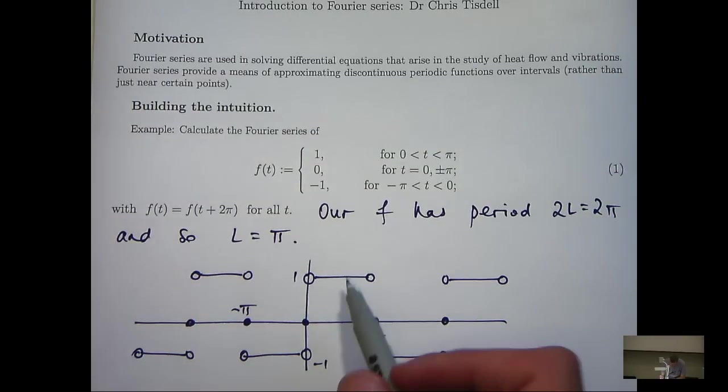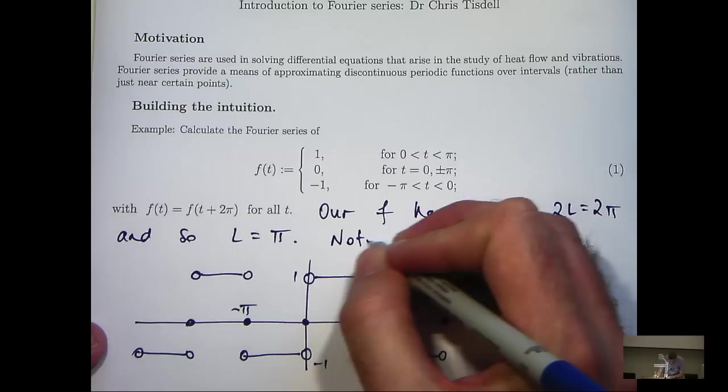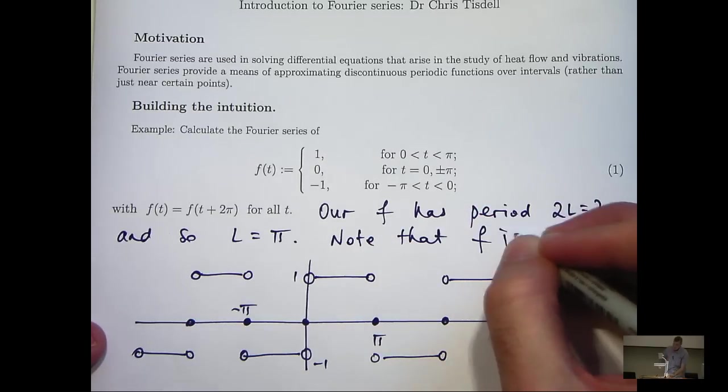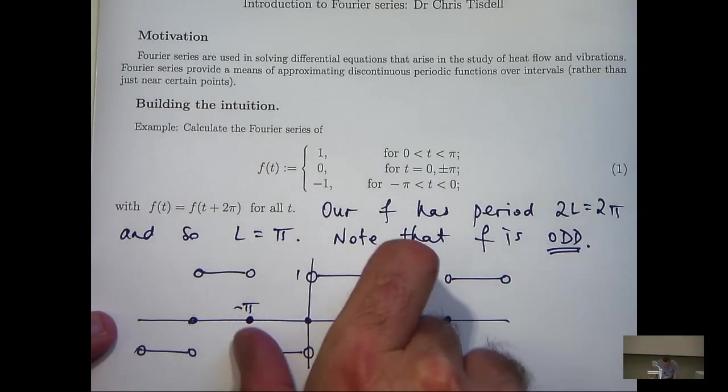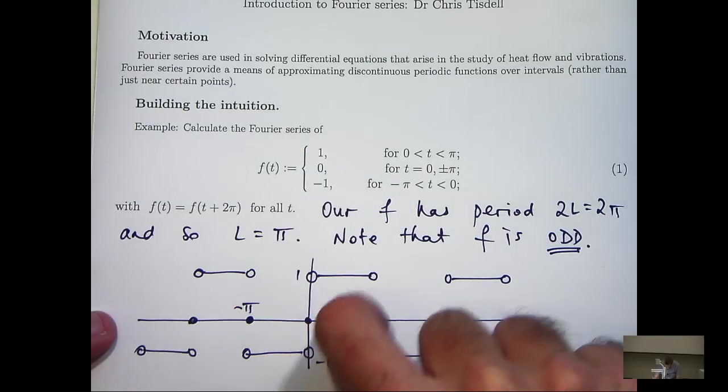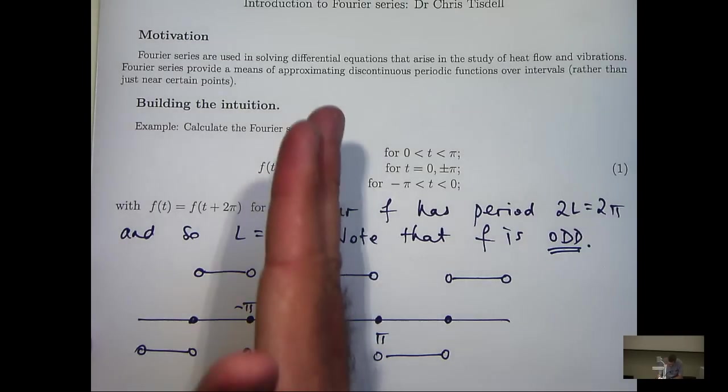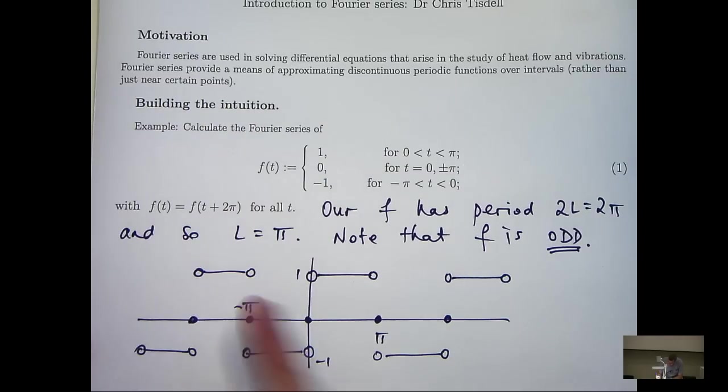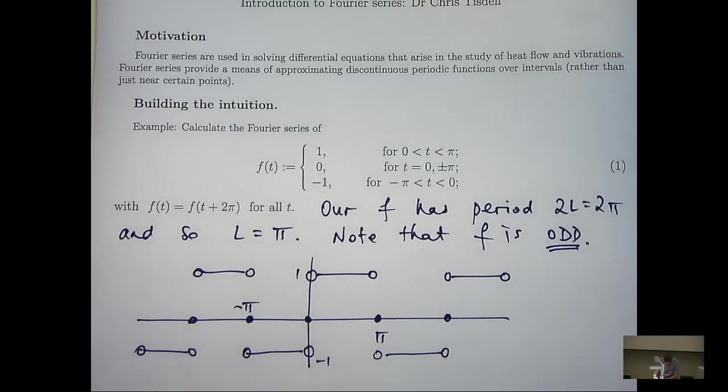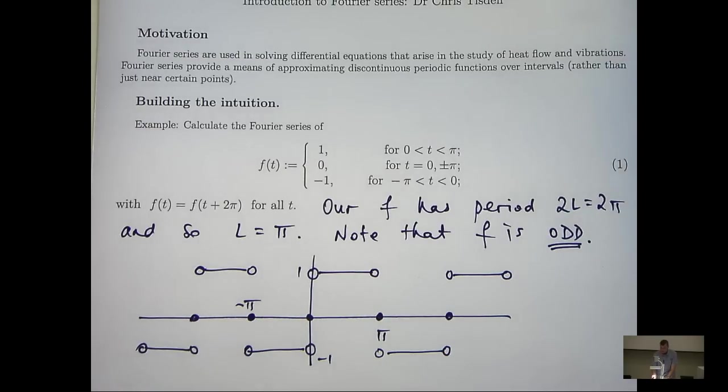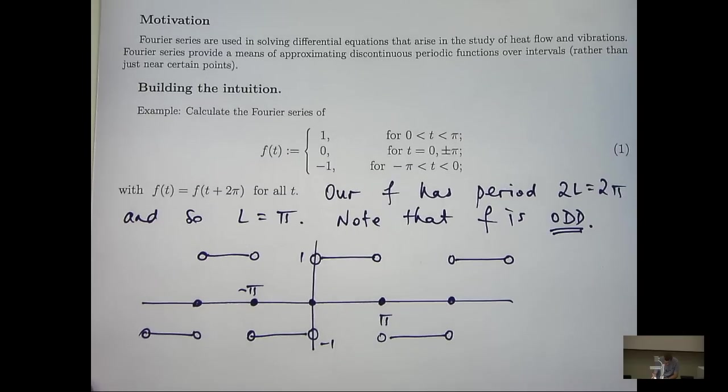Okay, so I can see that my graph is, in fact, odd. Now, by odd, I mean that if you take the graph and you rotate it 180 degrees around the origin, you don't change the graph at all. Another way of explaining this is that you can see everything to the left of the y axis is the negative of everything to the right of the y axis. So how does this help us? Well, let me show you.